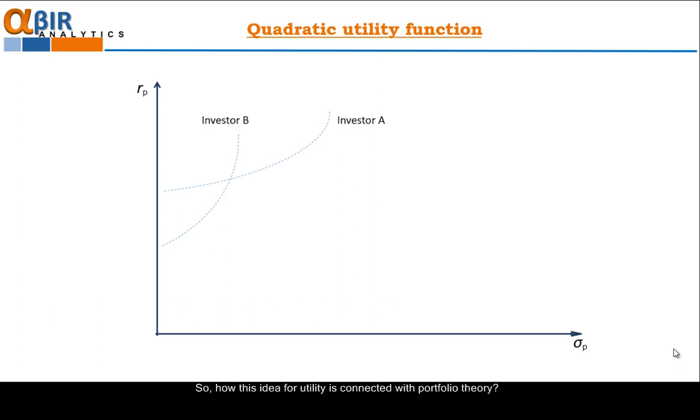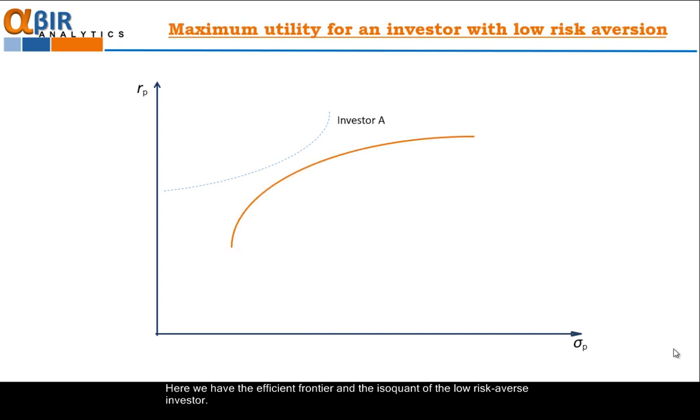So, how this idea for utility is connected with portfolio theory? Markowitz apply very simple and elegant way just by combining the iso-quants with the efficient frontier. Here we have the efficient frontier and iso-quant of the low risk averse investor. We just have to slip the iso-quant like this until it reaches the efficient frontier. The tangent point actually is portfolio because it lays on the efficient frontier. But this portfolio satisfies the risk aversion utility function of the investor A. Only this portfolio from all others on efficient frontier satisfies investor's requirements. This one and only portfolio maximizes the investor's utility.